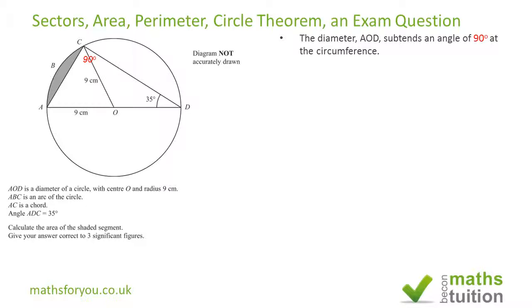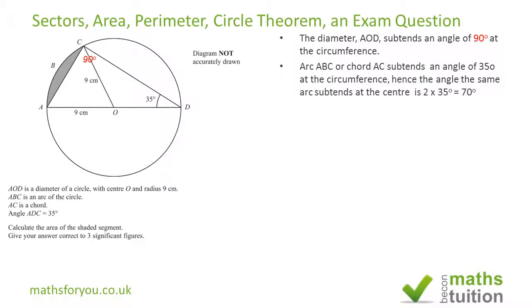The angle that actually matters is this one here. From circle theorem, the arc ABC or the chord AC subtends an angle of 35 degrees at the circumference. Therefore, the same arc or the same chord will subtend an angle double 35 at the center.